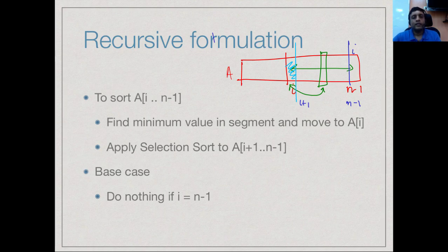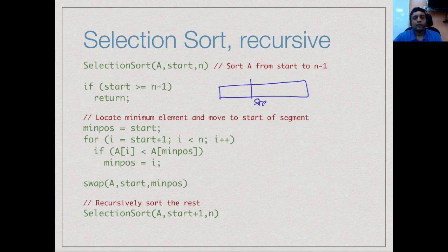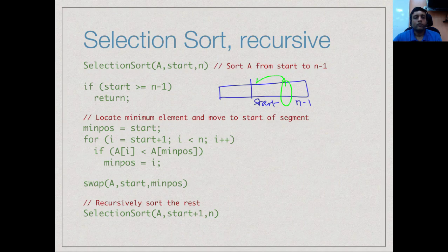In the recursive code, we call sort(a, start, n) where start is the beginning index of the unsorted segment and n is the total size. If start is n−1 or greater, we return immediately. Otherwise, we find the smallest value in a[start] to a[n−1] by initializing the minimum position to start and walking forwards, updating whenever a smaller value is found. We then exchange the value at that minimum position with the value at the starting position. Finally, we recursively call sort(a, start+1, n) to sort the remainder.